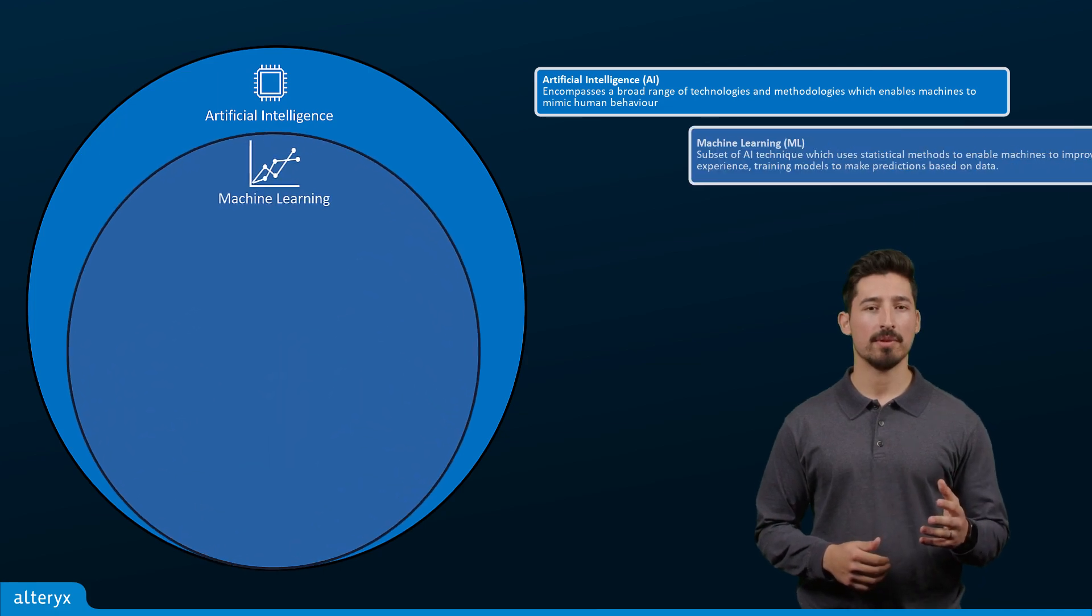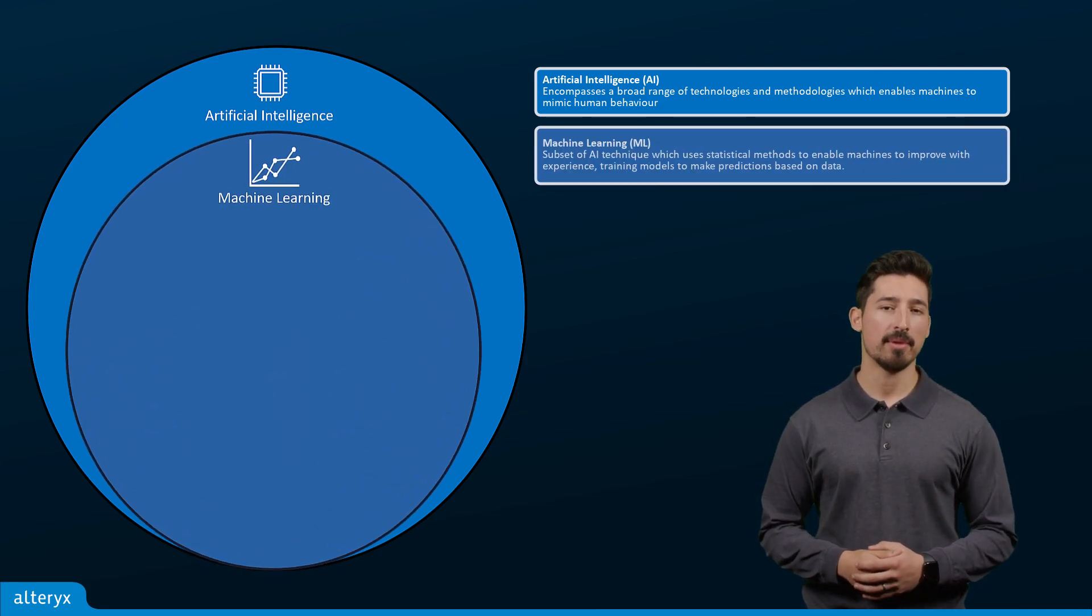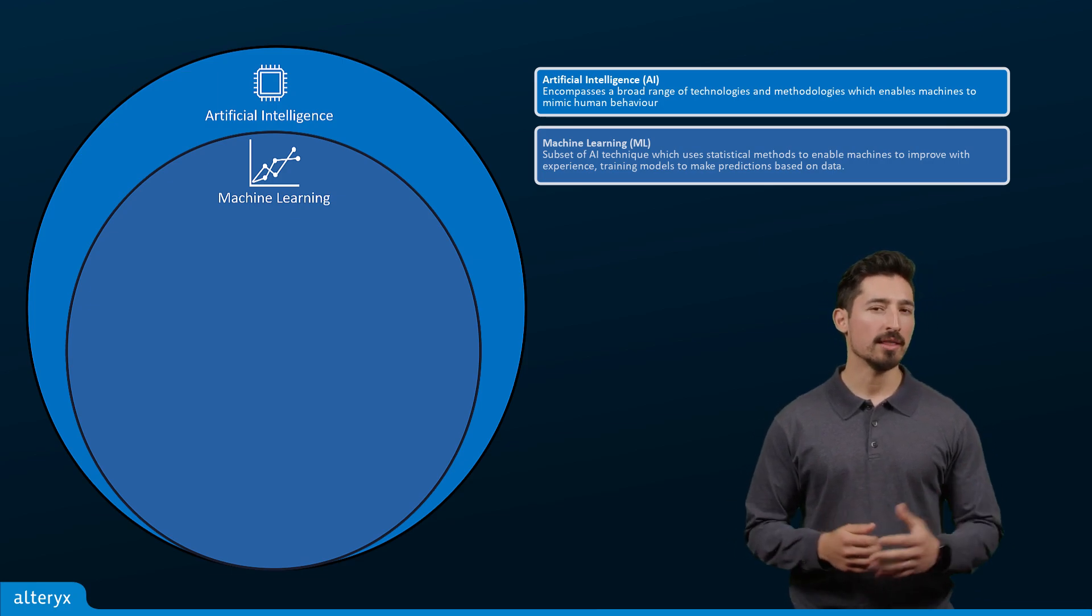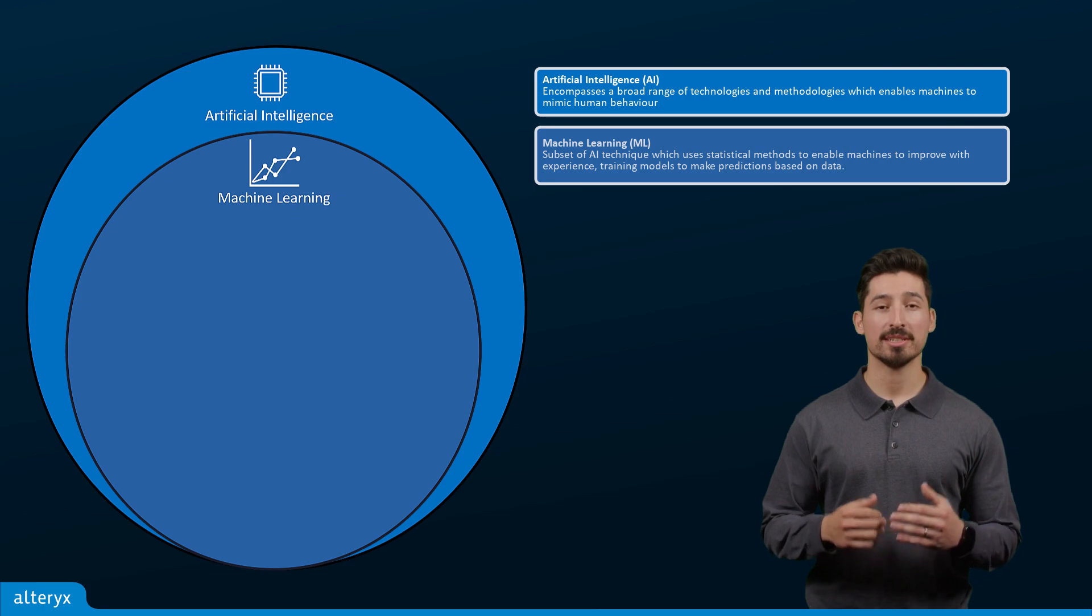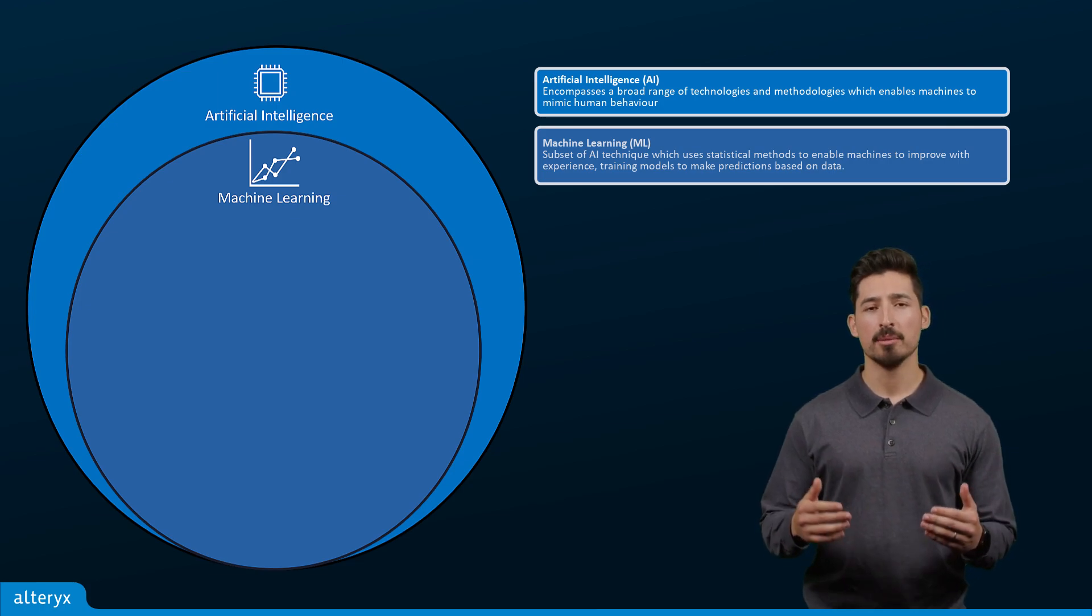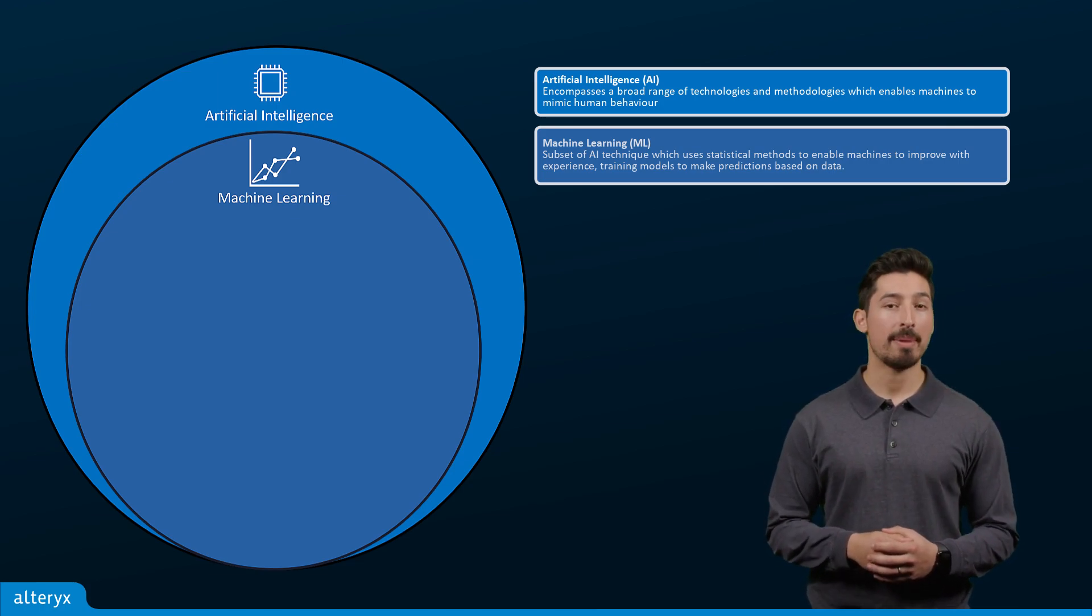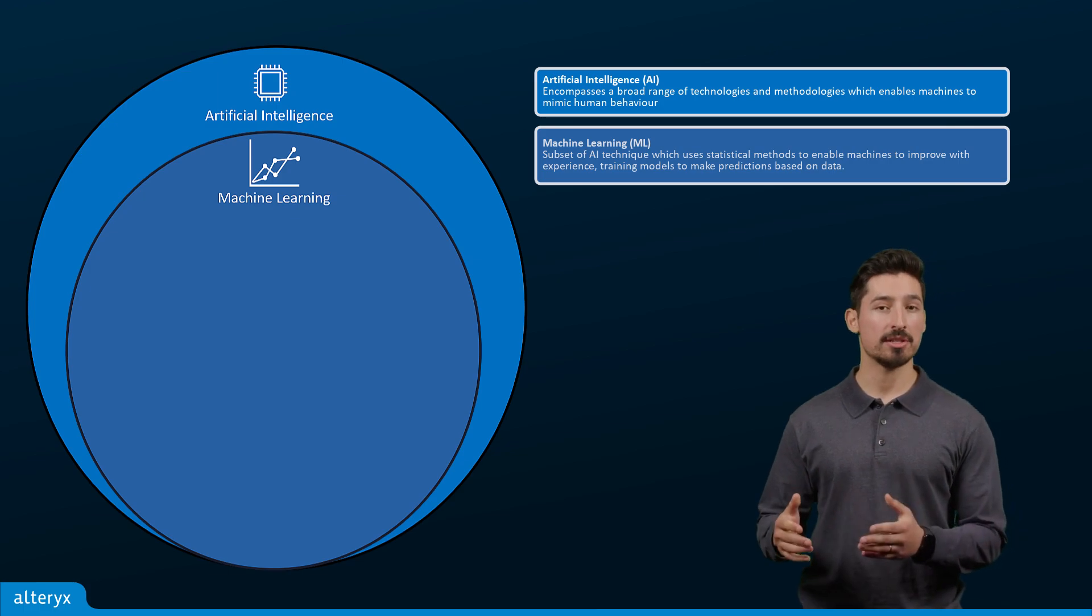Machine learning falls under the umbrella of AI and involves training models to make predictions based on data. But unlike traditional programming where explicit instructions are given to the model, machine learning algorithms learn patterns from data to make predictions or decisions.